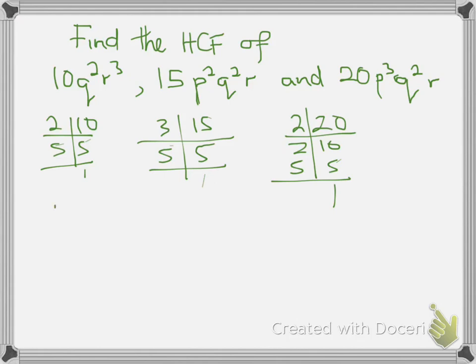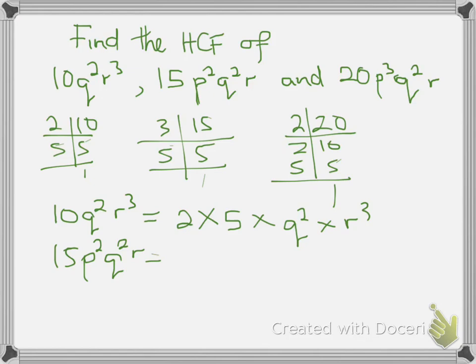Let's write the factors here. 10q squared r cubed is equal to 2 times 5. Remember that these terms are taken as they are: q squared times r to the power 3. For 15p squared q squared r, this is also 3 times 5 times p squared times q squared times r.